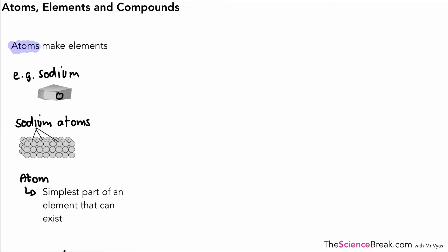Atoms can be broken down into other particles, subatomic particles, but the simplest part of any element is the atom of that element. So atoms are very important.